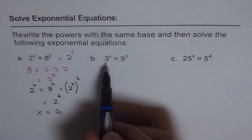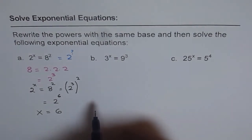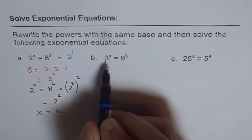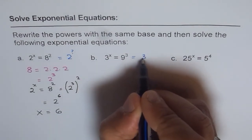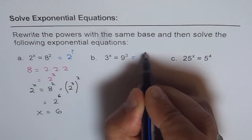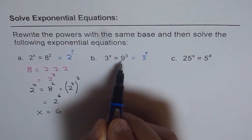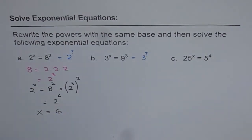Now we have the question: 3 to the power of x equals to 9 cube. What are we supposed to do? We are supposed to write 9 as base 3 to the power of some exponent — we want to write 9 as 3 to the power of something.